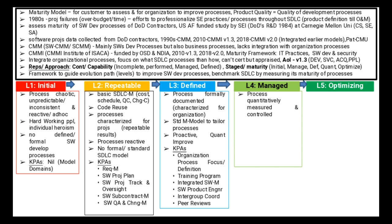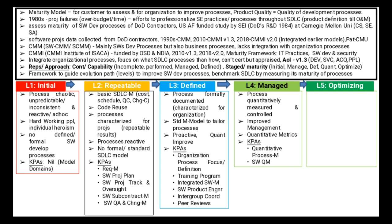At Level 4, the processes are managed quantitatively and measured as per quantitative metrics with improved management control. The key process areas are Quantitative Process Management and Quality Management.